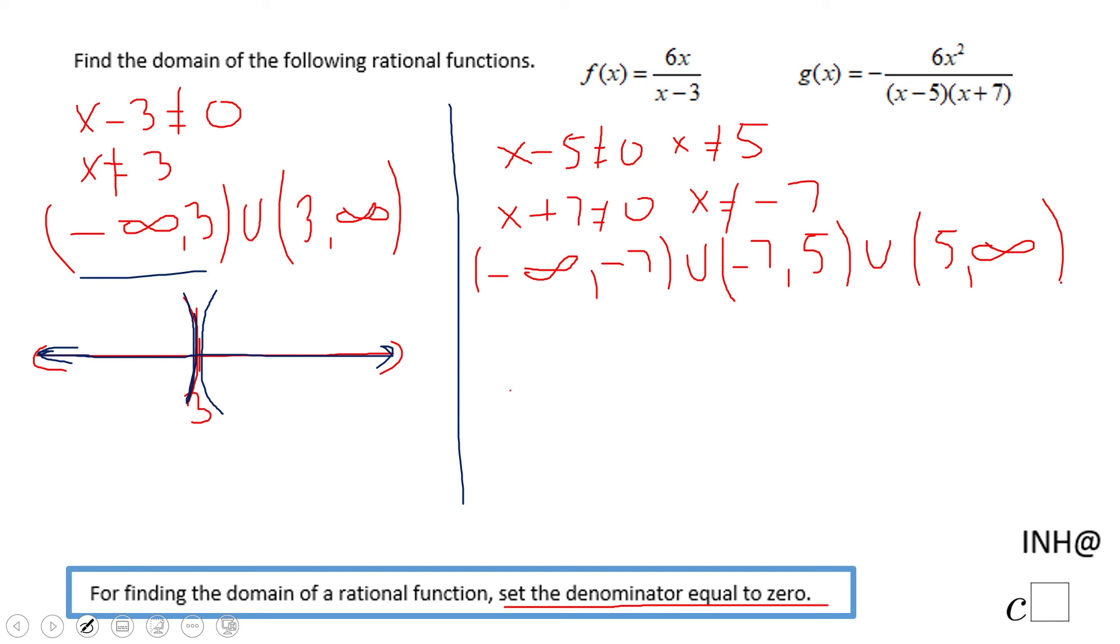Some of you may want to start with the number line first, which will be fine. So this is the number line. I'm going to plot negative 7 somewhere here, 5 somewhere here. And the domain will be what?